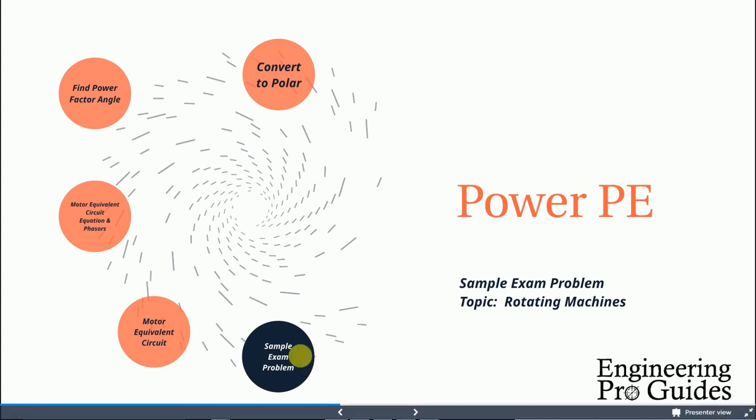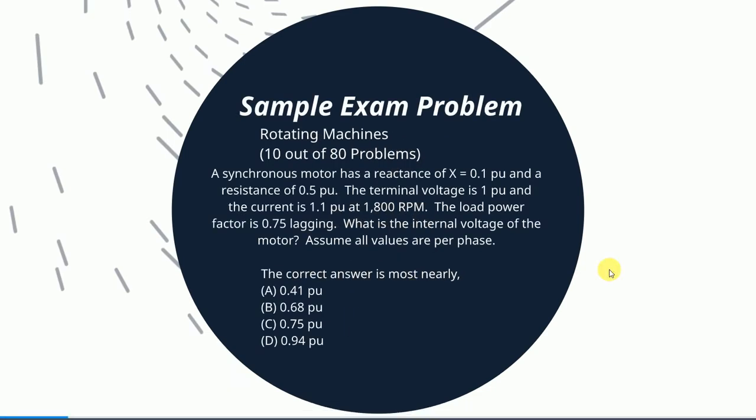The question reads: a synchronous motor has a reactance of X = 0.1 per unit and a resistance of 0.5 per unit, the terminal voltage is 1 per unit, and the current is 1.1 per unit at 1800 RPM. The load power factor is 0.75 lagging.